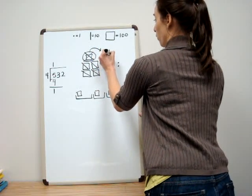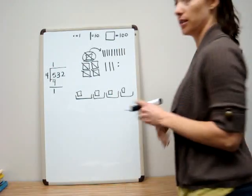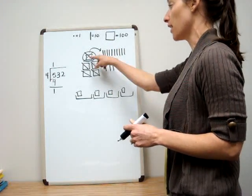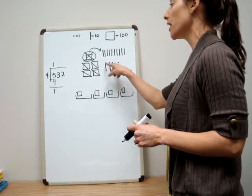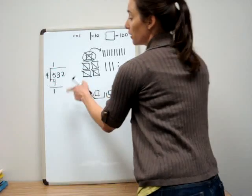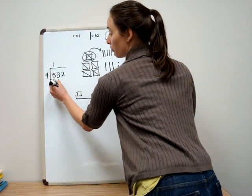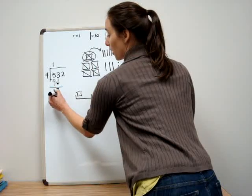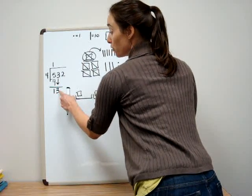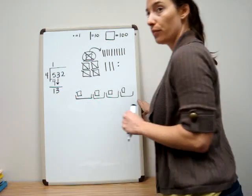This hundred I can cash in and that'll give me ten tens. So I have ten tens that I've cashed in, plus the three I already have — that gives me thirteen tens now. In the division algorithm, that's equivalent to dropping the three down. The three is in the tens place, so I'm showing I have thirteen tens to work with now.